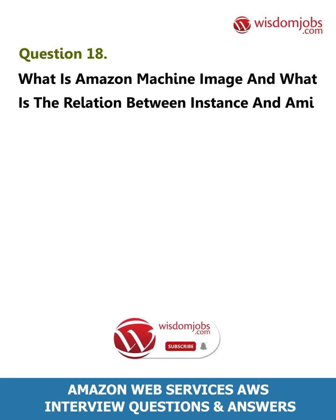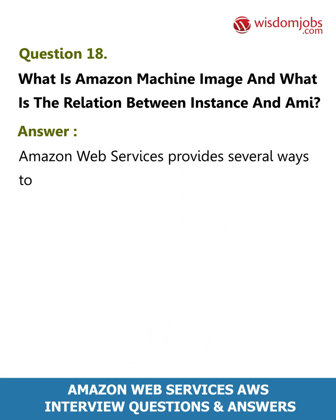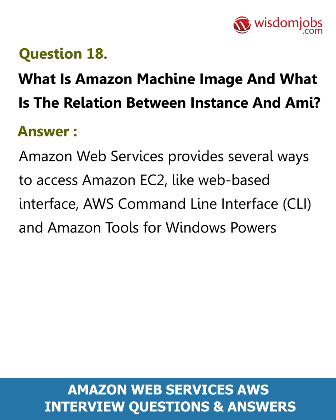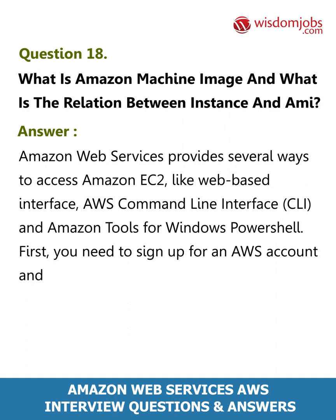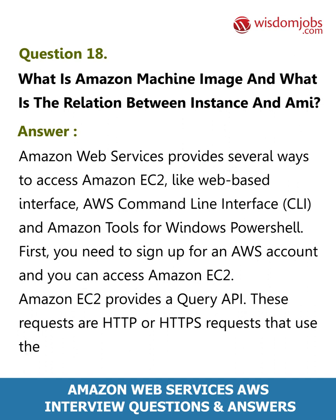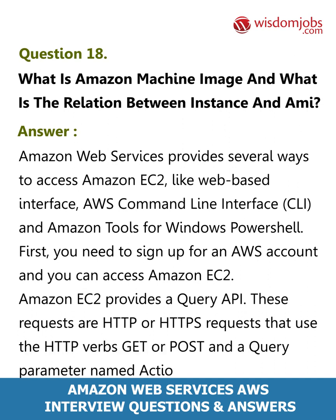Question 18: What is Amazon Machine Image and what is the relation between instance and AMI? Answer: Amazon Web Services provides several ways to access Amazon EC2, like a web-based interface, AWS Command Line Interface (CLI), and Amazon Tools for Windows PowerShell. First you need to sign up for an AWS account to access Amazon EC2. Amazon EC2 provides a query API — these requests are HTTP or HTTPS requests that use the HTTP verbs GET or POST and a query parameter named action.